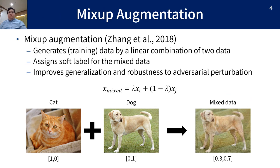Mixup augmentation is one of the recent state-of-the-art data augmentation and regularization methods for deep learning. Mixup generates training data by a linear combination of two data samples and assigns a soft label for this mixed data. Mixup has been known to improve generalization and robustness to adversarial perturbation.